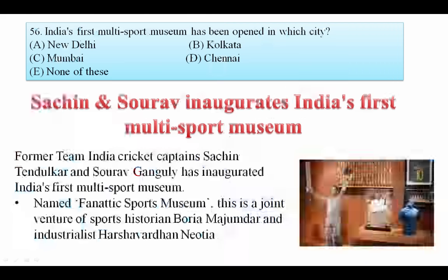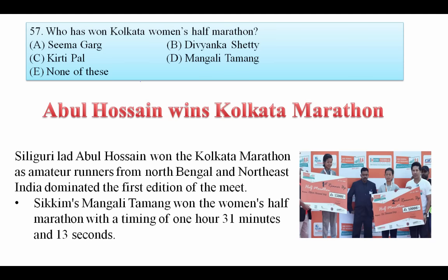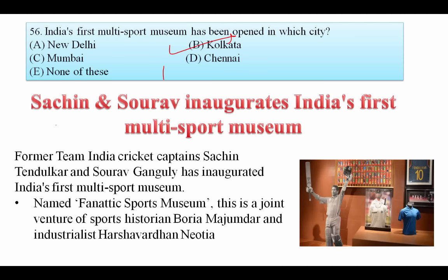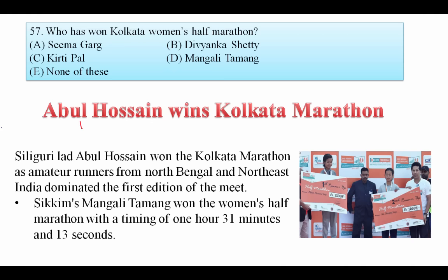India's first multi-sports museum has been opened in which city? Sachin Tendulkar and Sourav Ganguly inaugurated India's first multi-sports museum in Kolkata. Your answer is B — Kolkata. Who won the Kolkata Women's Half Marathon? Abul Hussein won the Kolkata marathon and Mangali Tamang won the women's half marathon. She is from Sikkim. Your answer is D.